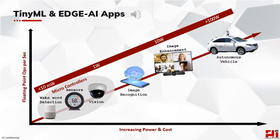TinyML apps typically consume less than 100 mW of power to be able to run on batteries. For example, an image recognition application running on an edge device like a cell phone or surveillance camera is not a TinyML application. However, wake word detection like Hey Alexa or Hey Siri running in less than a few mW is a TinyML application. Power consumption typically increases with increasing performance, resulting in increased cost, so power and cost economics are tailwinds for TinyML applications, with headwinds caused by performance.